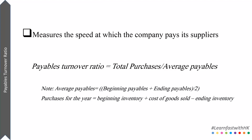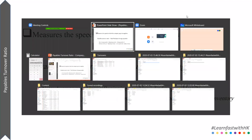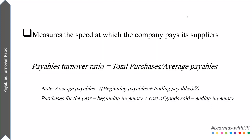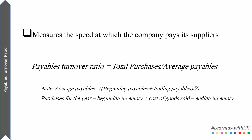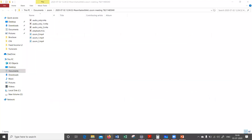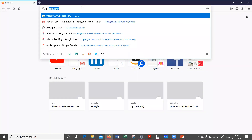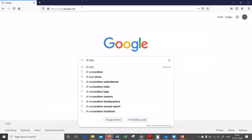Now I'm going to jump onto the financial statements of a company. The company I'm going to use today is VF Corp — it's a listed company in the US. Let me go ahead and open the company's website and fetch its financials. I'm just going to Google it.